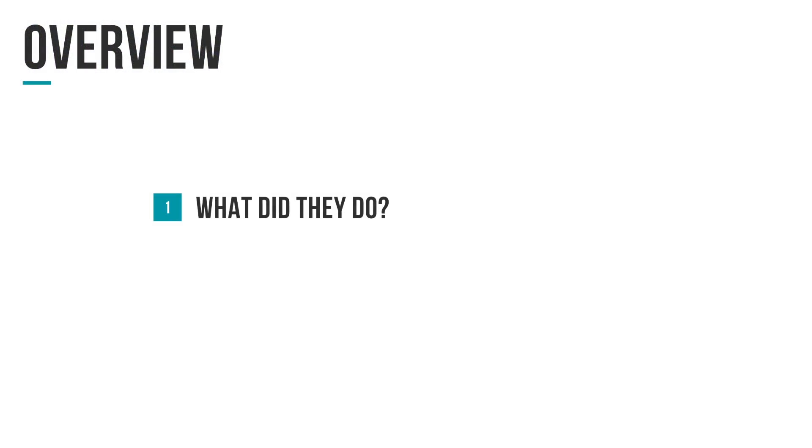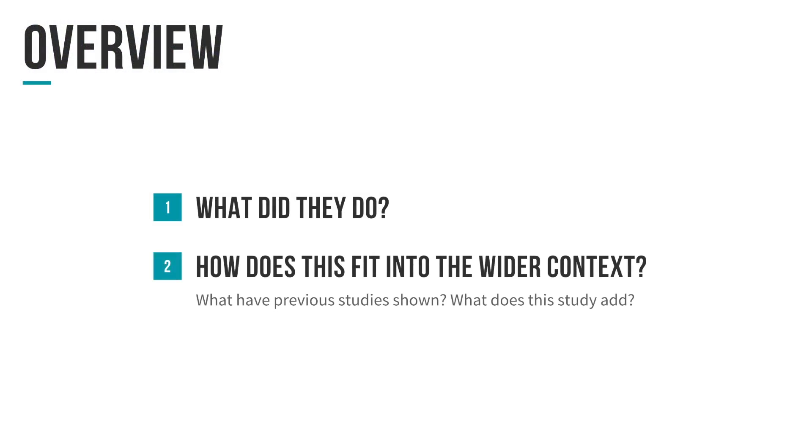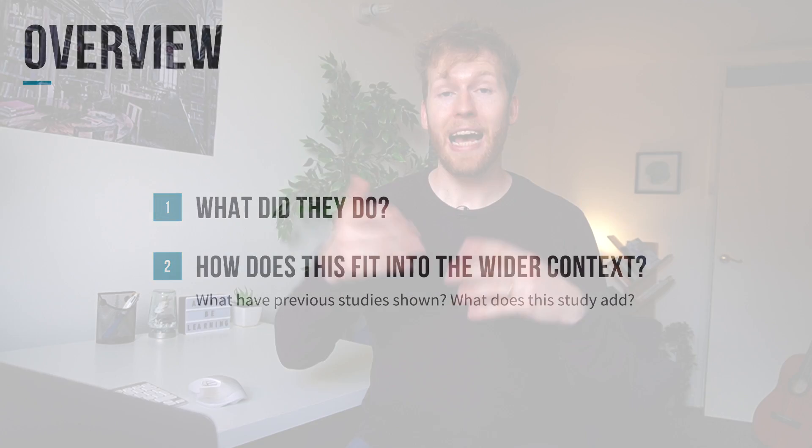The first thing I'll do is get an overview of the paper as a whole. I'll try to summarize it in one or two sentences and really hone in on exactly what they did. I'll think about the context — do I know any previous papers that have done something similar, how does this one differ, what does it add to the field, and who are the authors and what institutions are they from.